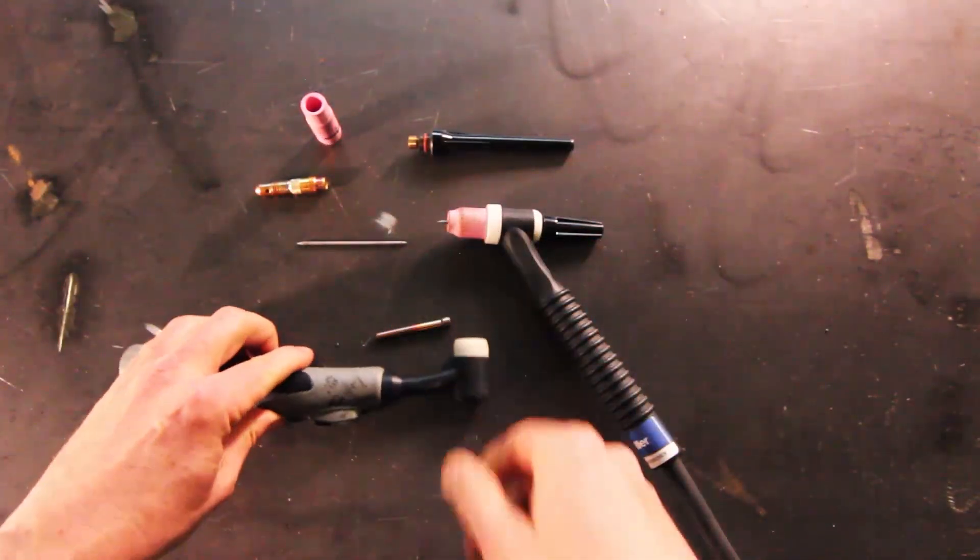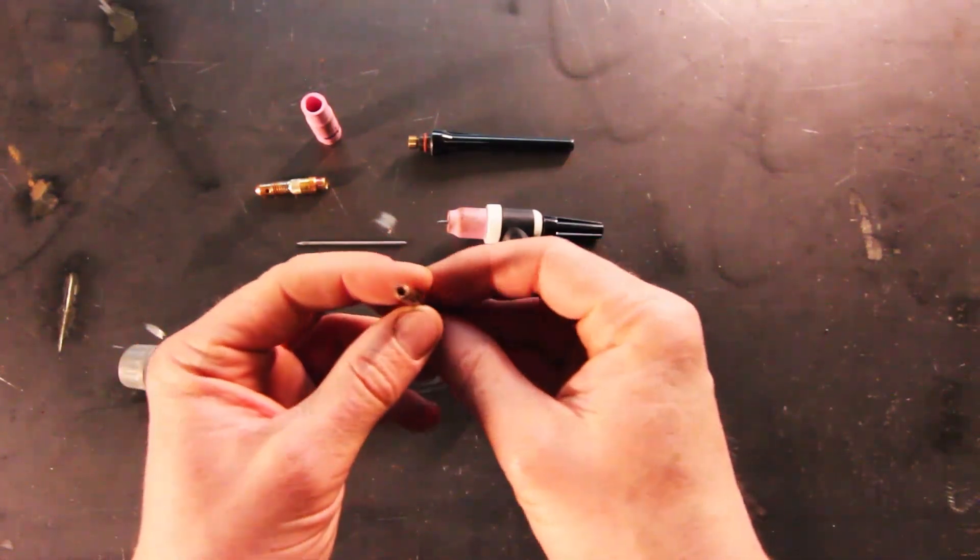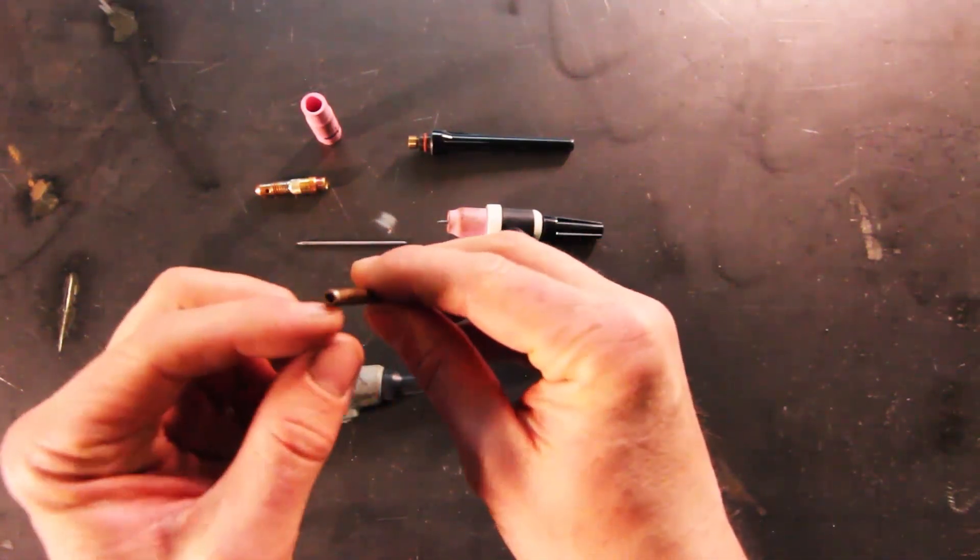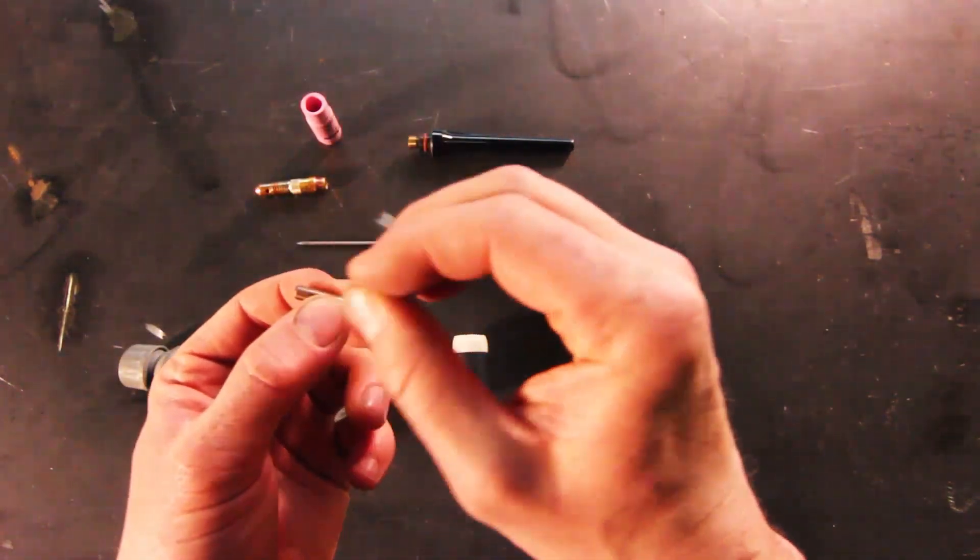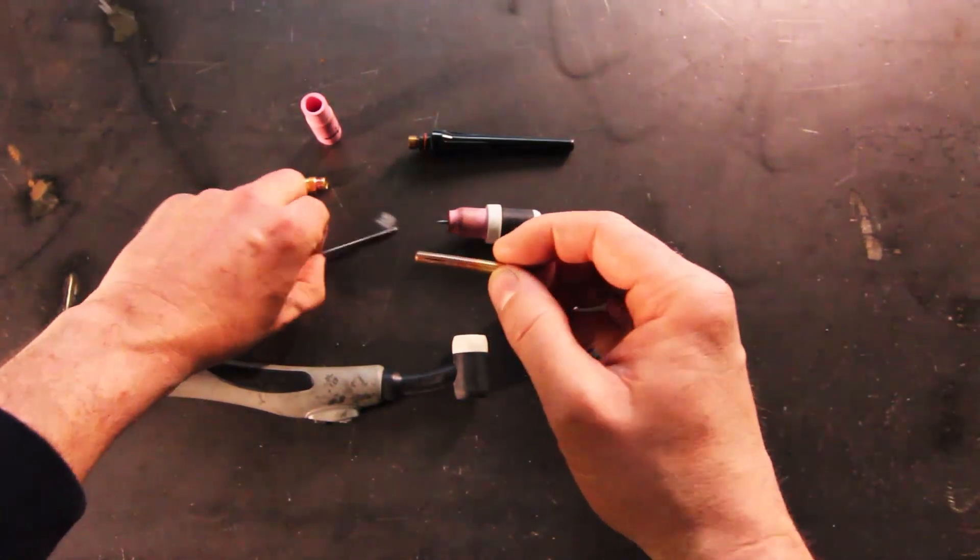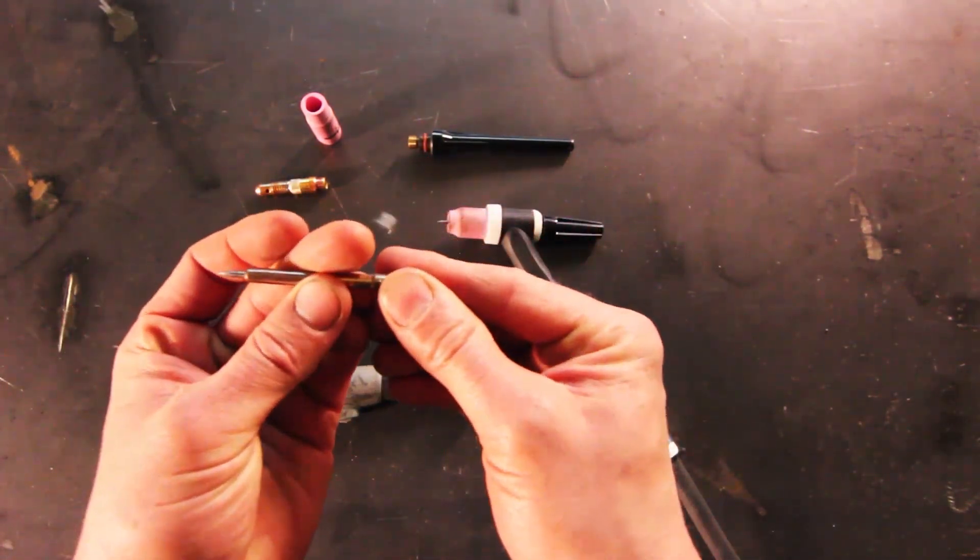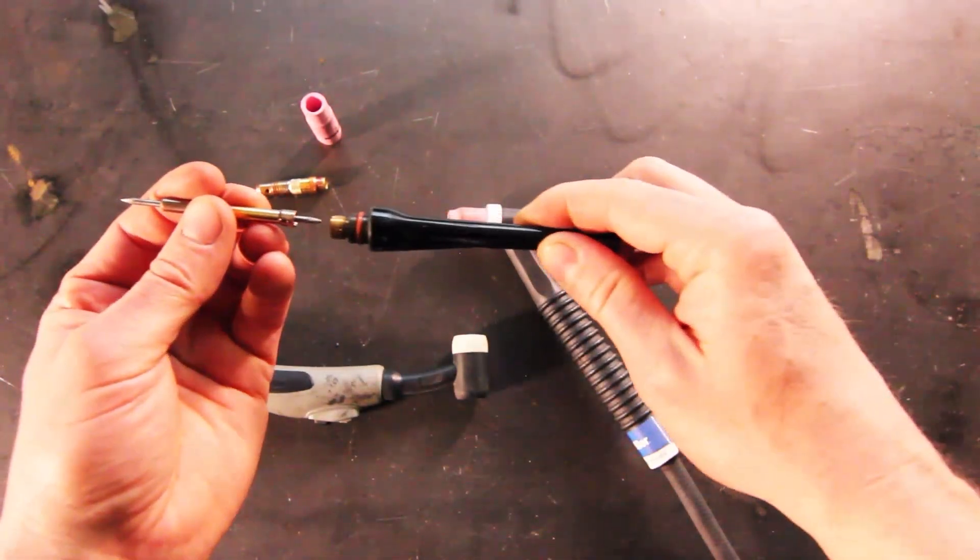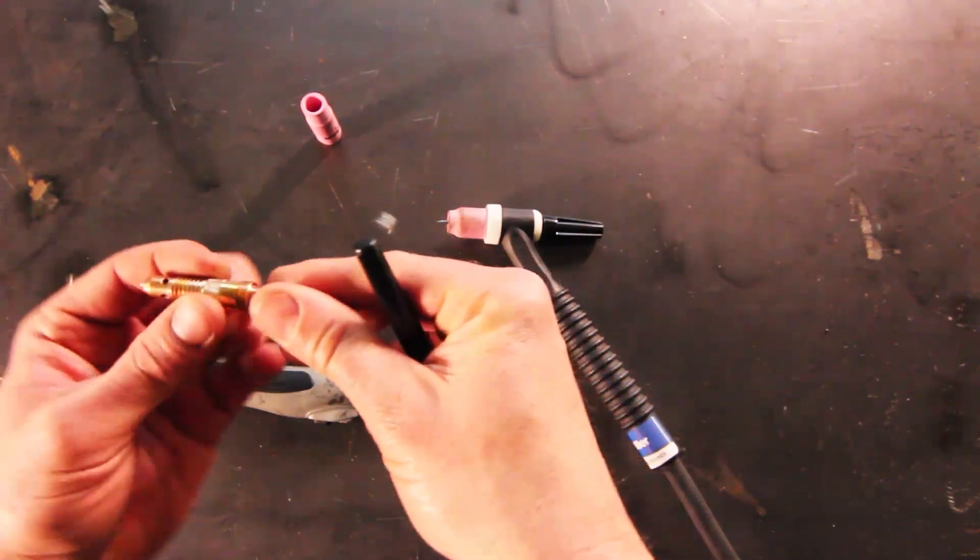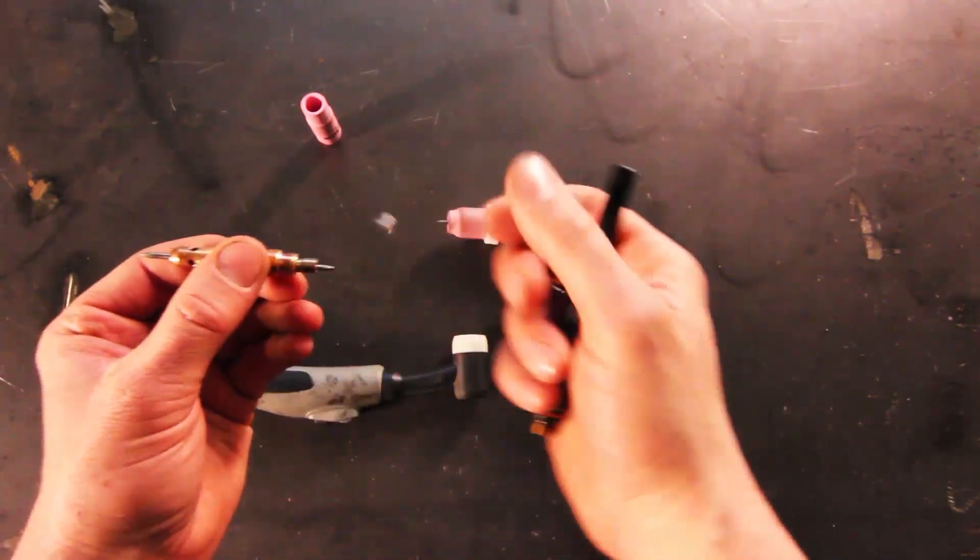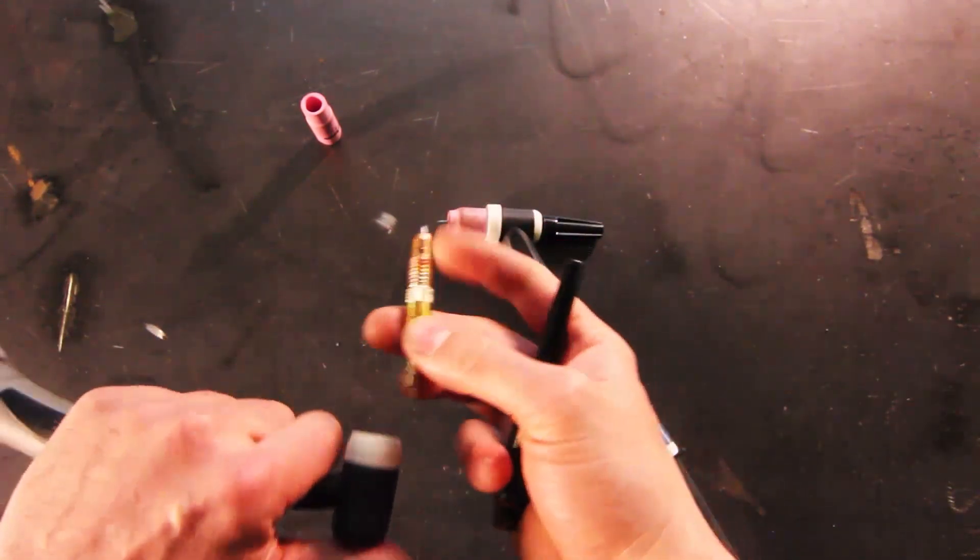That is your standard setup for a standard air-cooled torch. This is called your collet. As you can see, the collet has two slats in it. When it's pushed down from the back, they clamp down or pinch down on the tungsten. This is what holds the tungsten in place while you're welding. The back cap pushes on that back collar, pushing down on those two slats and pinching it, holding it into place.